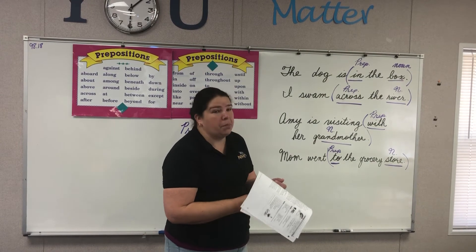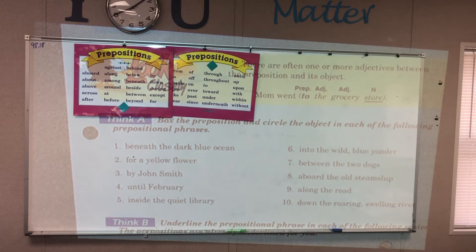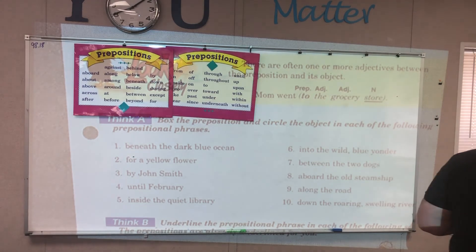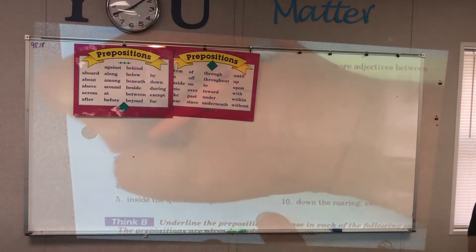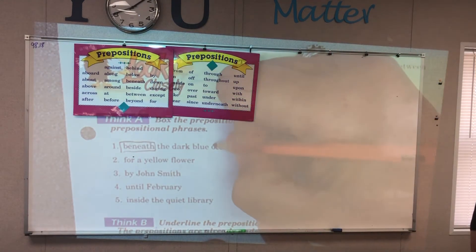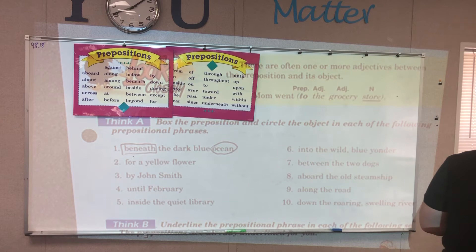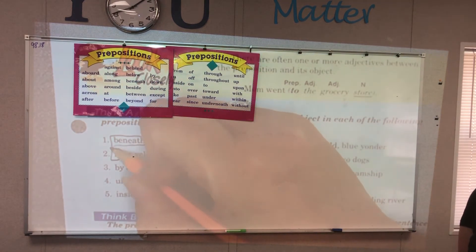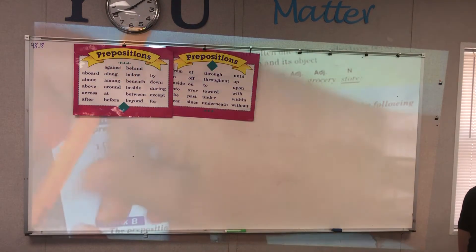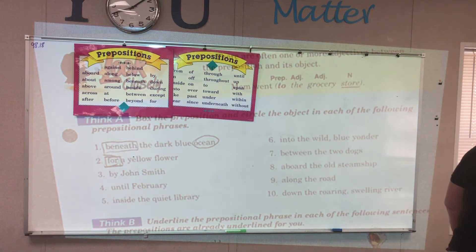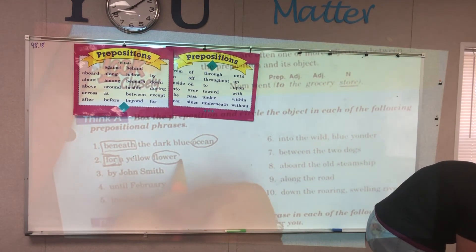Let's take a look at your seat work paper, boys and girls. This is how your paper looks on page 207. We're going to do a few from each section, and you are to finish during your seat work time. Let's start with Think A. They want us to put a box around the preposition and a circle around each object of the prepositional phrase. 'Beneath the dark blue ocean' — 'beneath' is our preposition, and 'ocean' is our noun that comes after it. How about 'for a yellow flower'? 'For' is our preposition, and 'flower' is our noun.